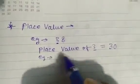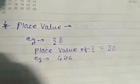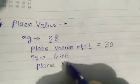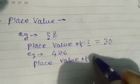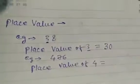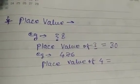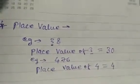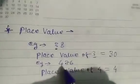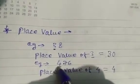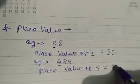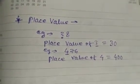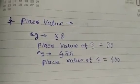Taking a second example: 476. If I want to know the place value of 4, I write 4, then count the digits after 4 in the number — there are 2 digits after it. So I add two zeros: the place value of 4 is 400. This is how you can write place values.